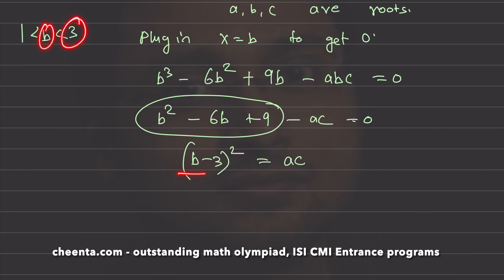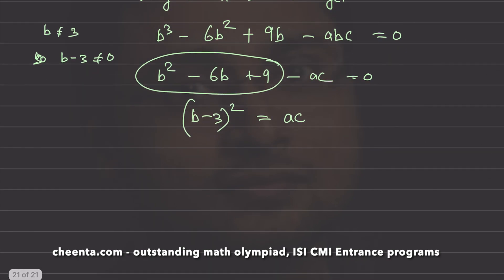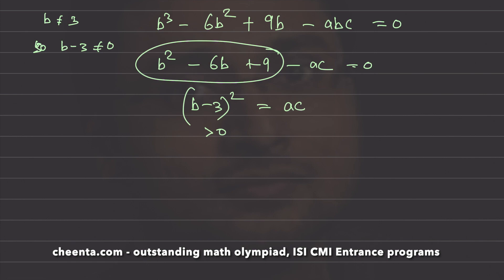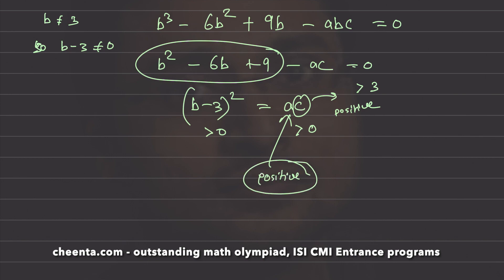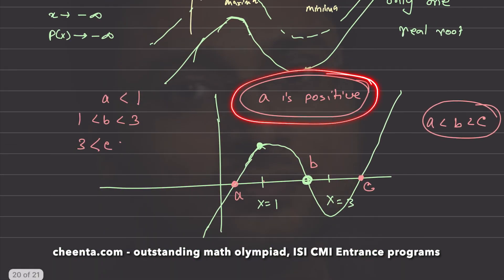Now, b is less than 3, so b ≠ 3, meaning (b−3)² > 0. Therefore ac > 0. We already know c is greater than 3, so c is positive. That means a must also be positive. It's quite beautiful — a must be positive because ac > 0 and (b−3)² > 0 since b ≠ 3. So we've found that a is a positive number, which is what we needed to show that a is between 0 and 1.